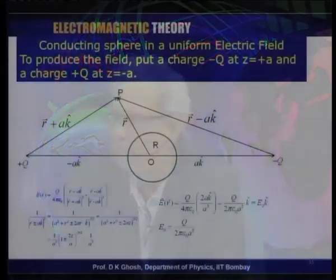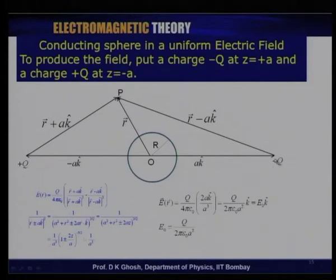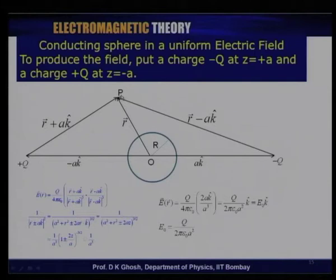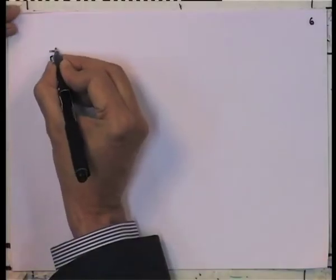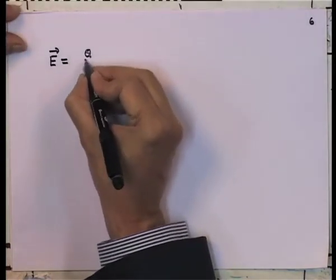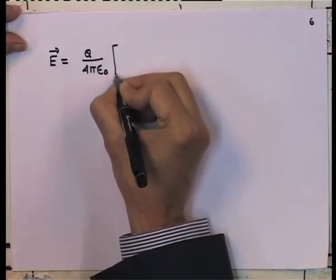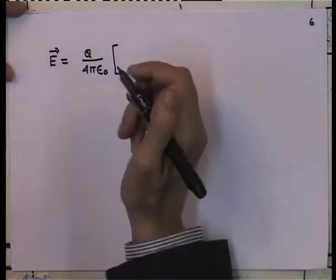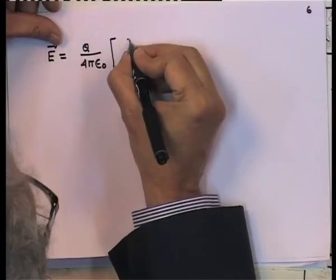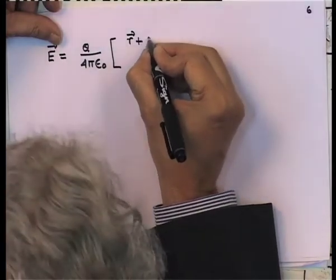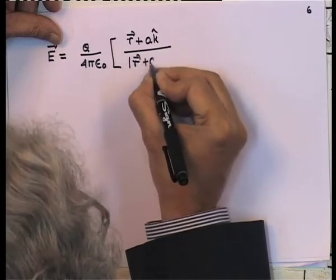We consider two charges q and −q located at −a and +a from the center of the sphere, and we ultimately let these distances go to infinity. This reproduces a constant electric field. If the charge −q is at position a·k̂ and +q is at −a·k̂, then the electric field at an arbitrary point P with position vector r is given by Coulomb's law: E = (q/4πε₀)[(r + ak̂)/|r + ak̂|³ − (r − ak̂)/|r − ak̂|³].